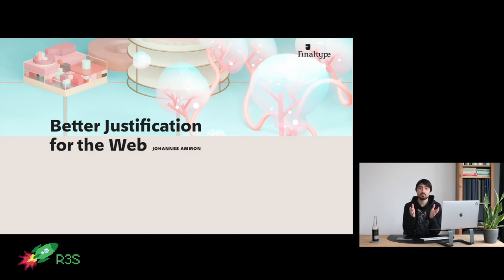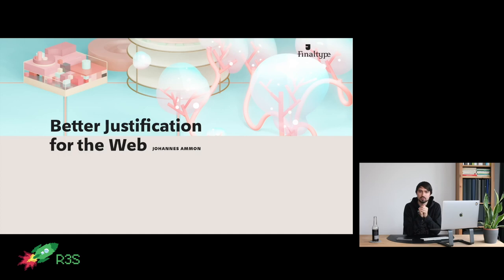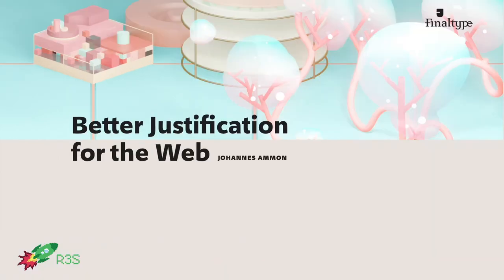Thank you very much for the opportunity to talk at this unique event. My name is Johannes Amon. I'm a graphic designer and typography nerd from Germany. I'm living in the city of Mainz, where Johannes Gutenberg started a worldwide media revolution about 500 years ago. In this talk, I'm going to explain how we can learn from him when dealing with justified text on the web.